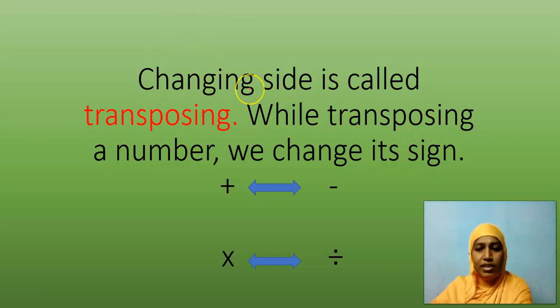This is what we have practiced even last year. Changing side plus means it will change to minus. If it is in minus, it will change to plus. If it is in multiplication, it will change to division. This rule is called as transposing rule. Is it clear, my dear children? Okay, now let's have an example.